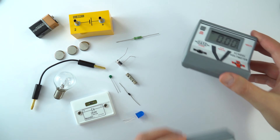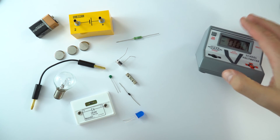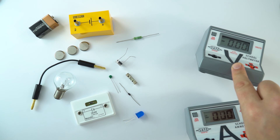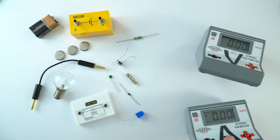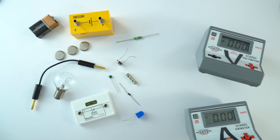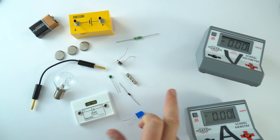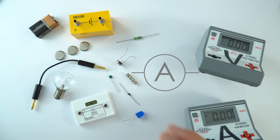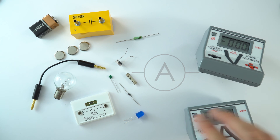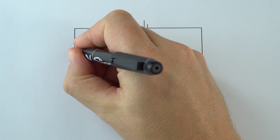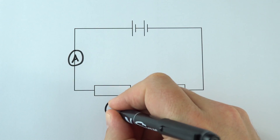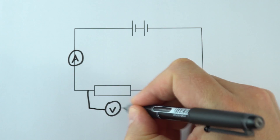Finally, we have a couple of devices for measuring what's going on inside the circuit. The one with the big V is a voltmeter, which measures potential difference in volts. The one with the big A is an ammeter, which measures the current flowing in the circuit in amps. These have a symbol of a V or an A in a circle. When putting these into a real circuit, we always put the ammeter in series with the component, and the voltmeter across the component we're measuring the potential difference across.